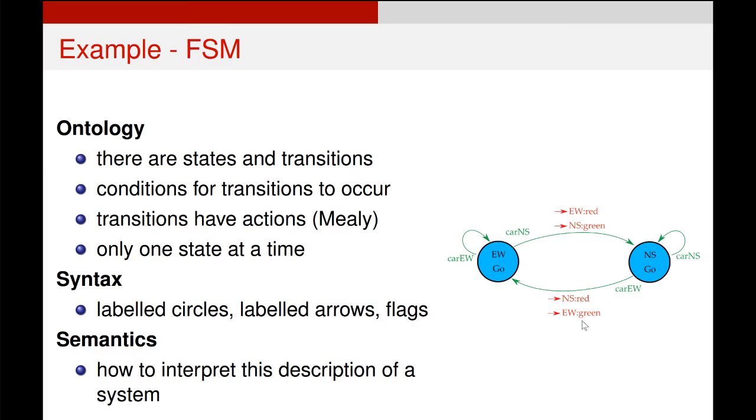The syntax is then how do we draw that on a bit of paper? How do we draw that diagrammatically? Well we use blue circles with the labels for the states and then we use arrows for the transitions and we use red to show the actions that happen on those transitions.